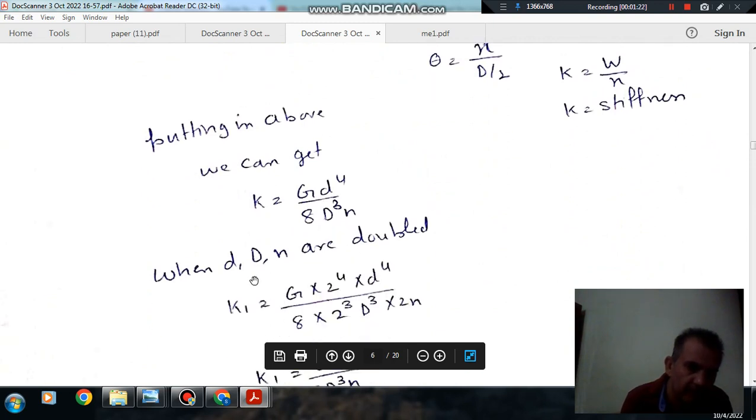So when small d, capital D, and n are doubled, this will become 2d is your wire diameter, and this will become 2D, and this will become 2n.